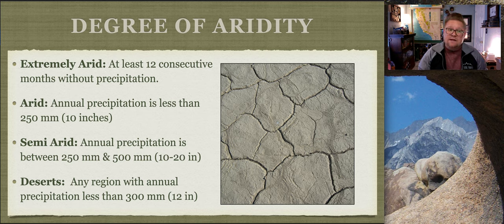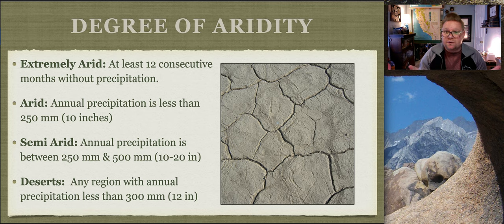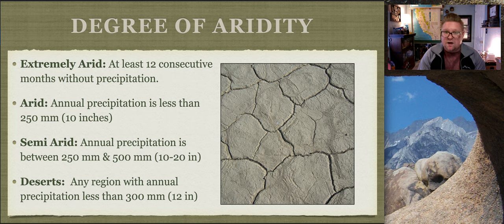Semi-arid environments have annual precipitation between 250 and 500 millimeters, somewhere in the 10 to 20 inch range per year. To put it in perspective, Death Valley can have about 2 inches on any given year, while rainforest regions near Ecuador can receive up to 200 inches per year. We use the blanket term 'desert' for any region with precipitation less than 300 millimeters or 12 inches per year. In order to be classified as a desert, we look at precipitation values, not temperature.